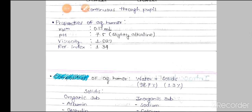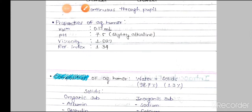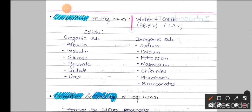The properties of the aqueous humor are as follows: it has a volume of 0.13 ml, a pH of 7.5 (slightly alkaline), a viscosity of 1.029, and a refractive index of 1.34. In terms of composition, it contains 98.7% water and only 1.3% solids, making it considerably thinner than the vitreous fluid.